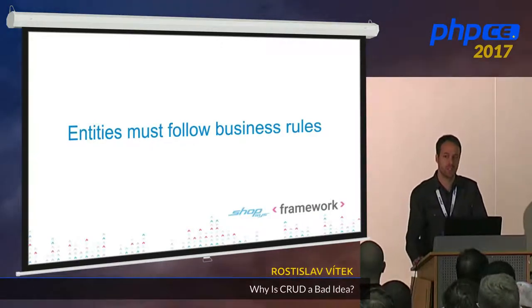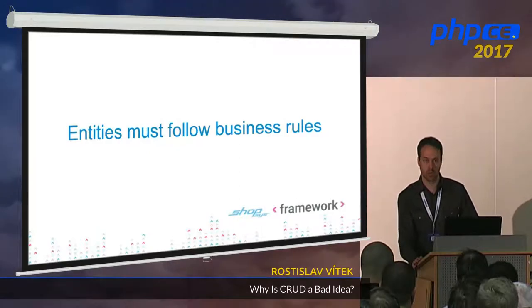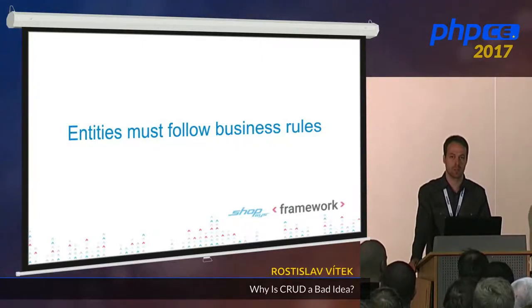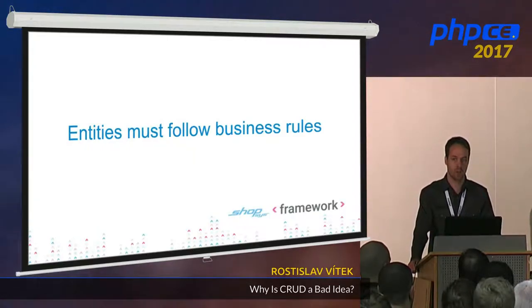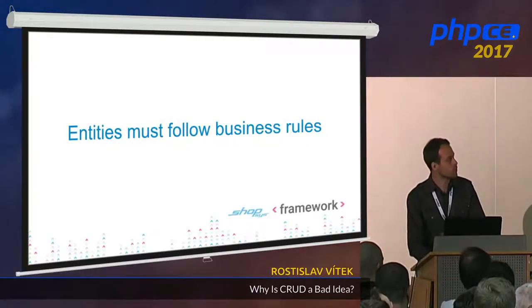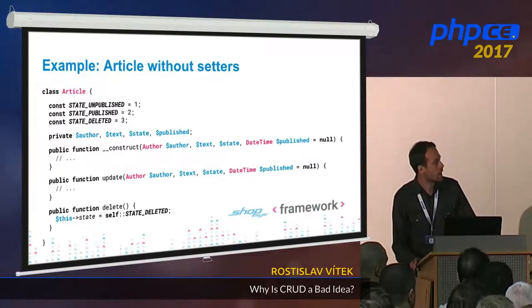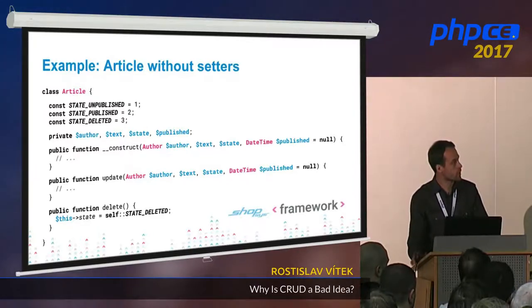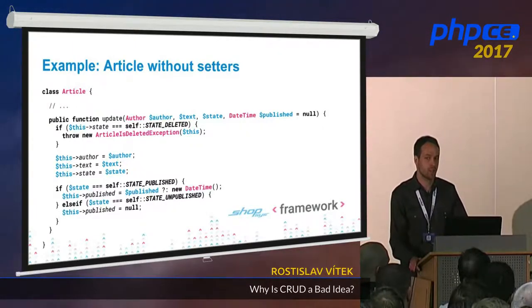What's the problem here? Entities often must follow some business rules and they are constrained by real-world scenarios. That means we need to manage to keep consistency — for example, the article should also have the published date set. This is very difficult to achieve with the previous approach because there is no restriction for developers on how to interact with that object. So what can we do? Some basic refactoring: move the CRUD methods directly into the Article class. Then you can see the implementation of, for example, a delete method which is a soft delete and sets the state to deleted.